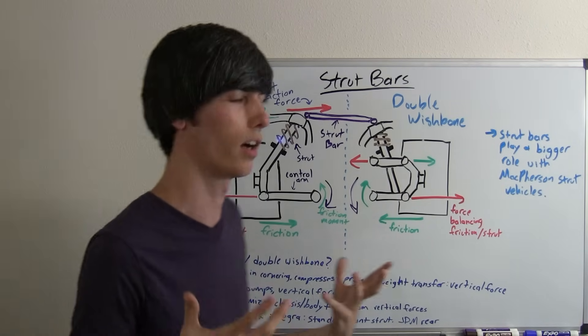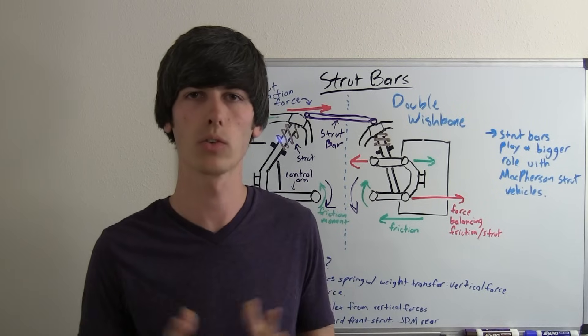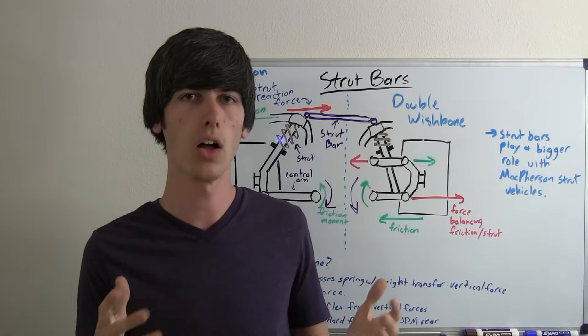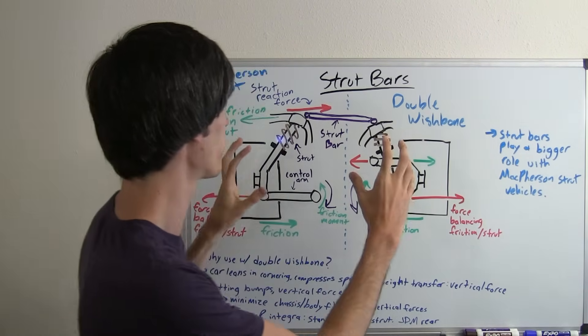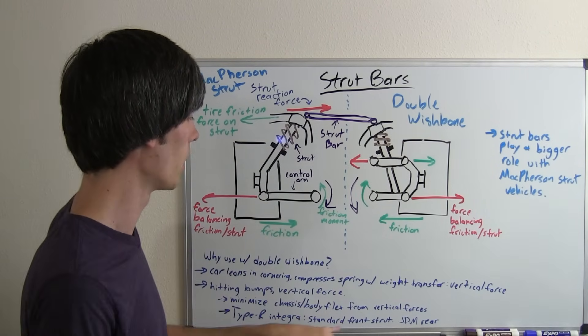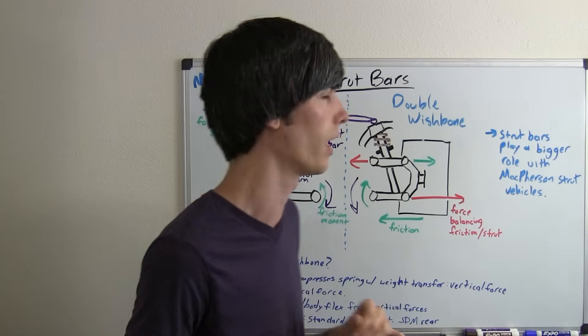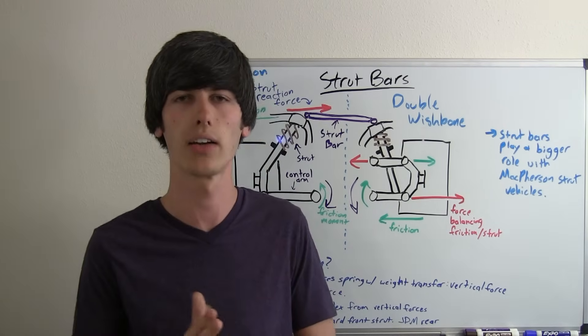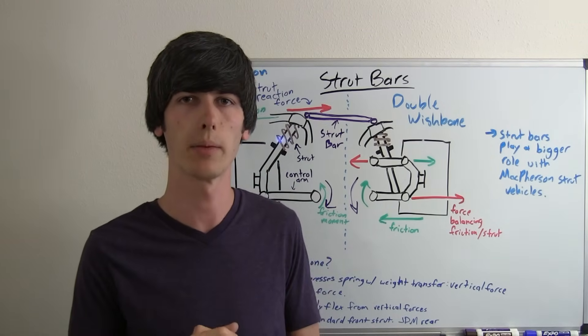That's why on a type R it comes standard and quite a few cars out there it comes standard. Also in the rear the same principles apply whether this is in the front of the car or the rear of the car. I believe the JDM Acura Integra type R did come standard with a strut bar in the back.